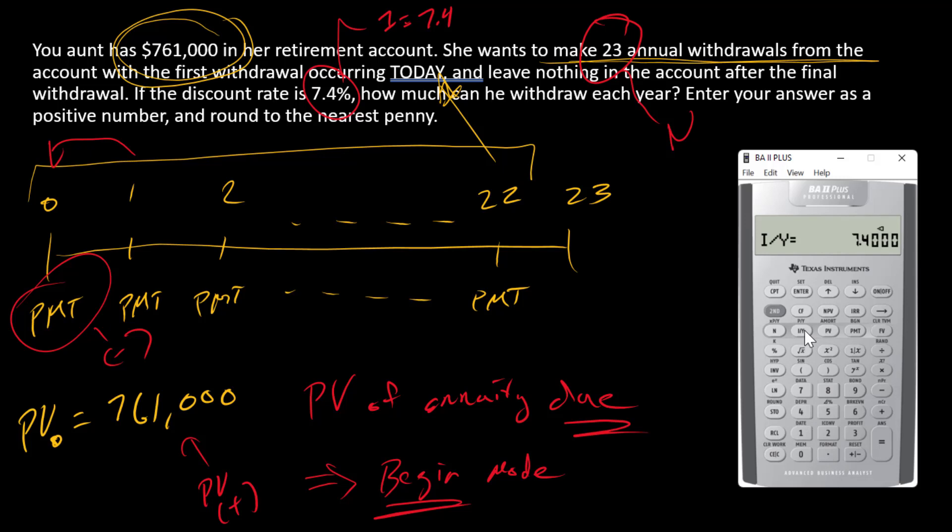Before I proceed then, I just need to get my calculator into begin mode. And the way I do that is with the second function above the payment key there. It says BGN. So I'm going to say second payment, which is begin.